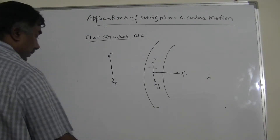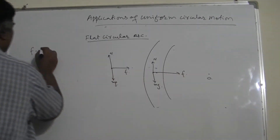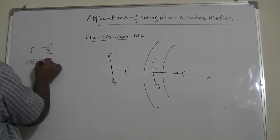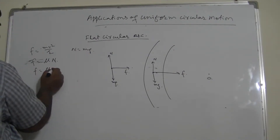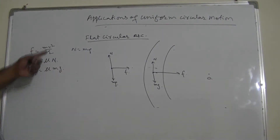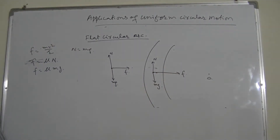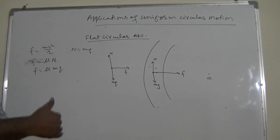In three dimensions, the weight is mg downward, normal reaction N is upward, and the force of friction F provides the centripetal force. So F equals mv²/r. If the coefficient of static friction is known, F equals mu times N, and since N equals mg, we get F equals mu mg. From this, the safety speed can be found. If the car exceeds that safety speed, it will overturn.